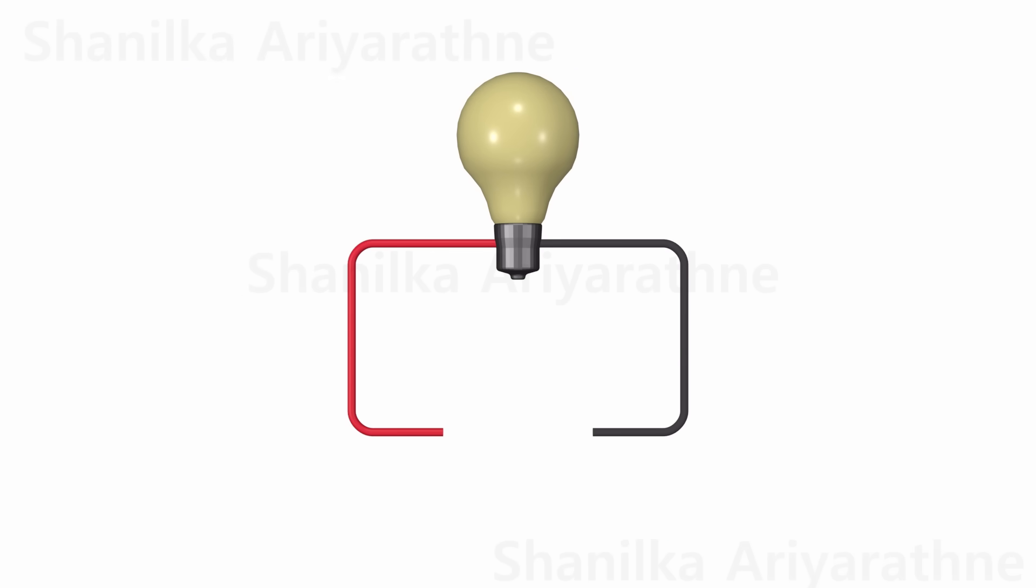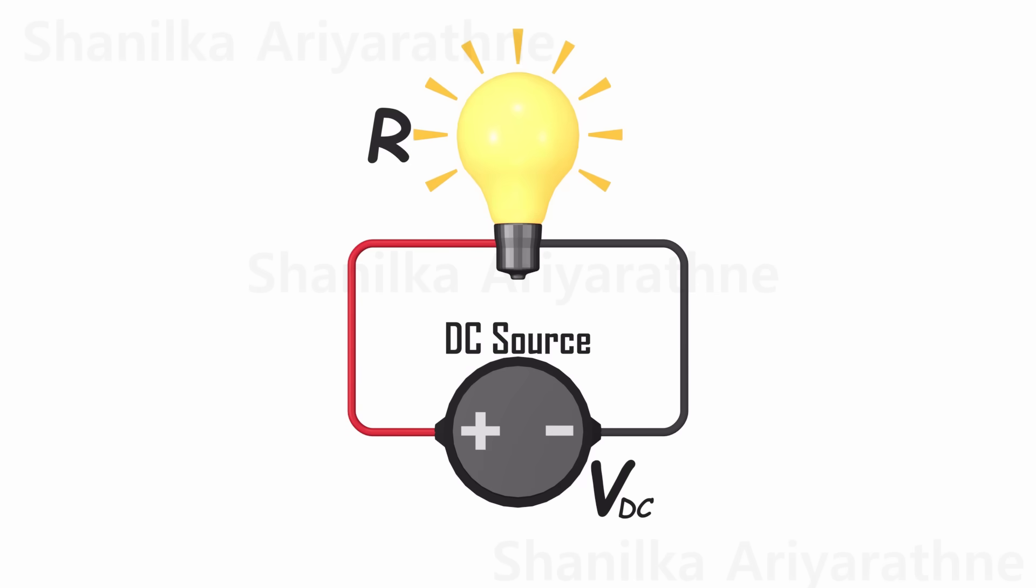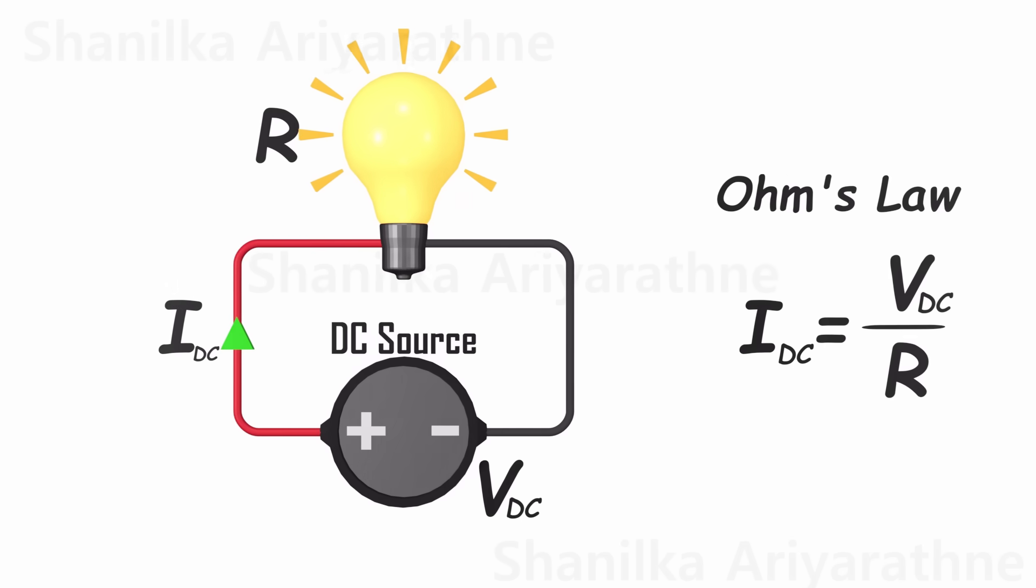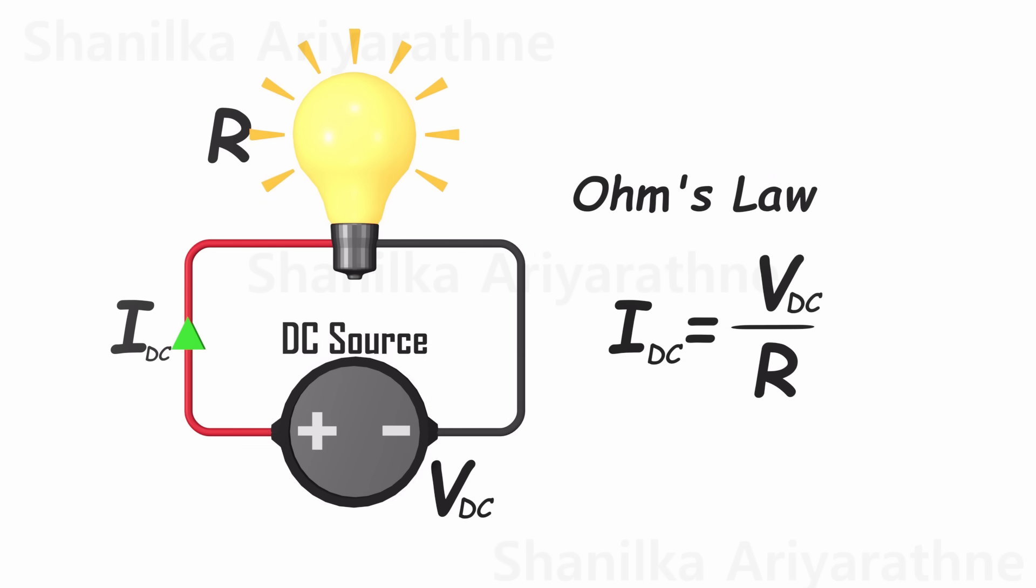Observing this basic circuit, there is a light bulb with resistance R. Once a direct current power source is connected, the bulb illuminates. To determine the current flowing through the circuit, we apply Ohm's law. Current equals voltage divided by resistance.